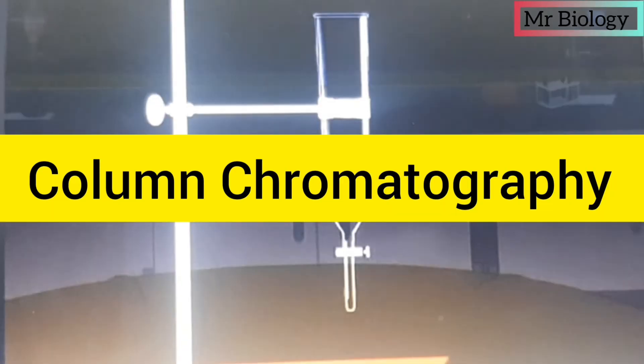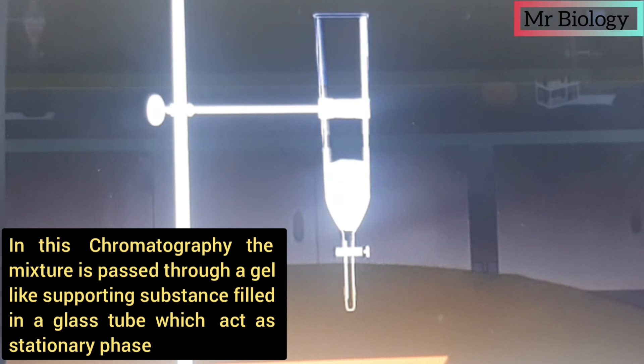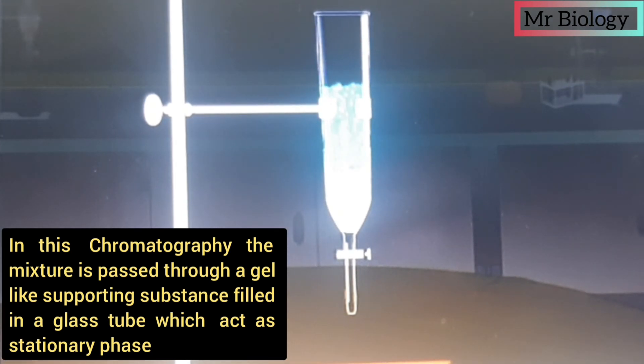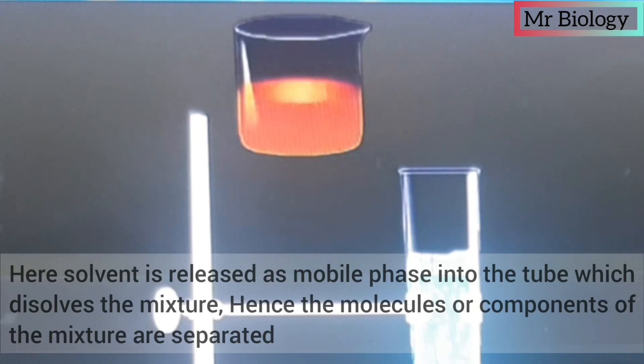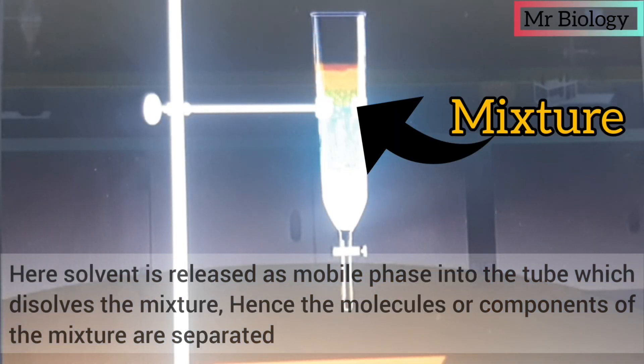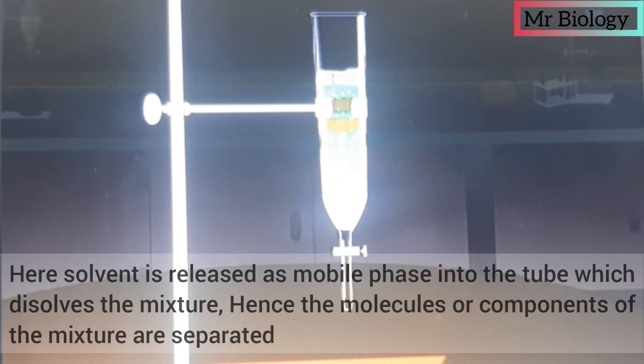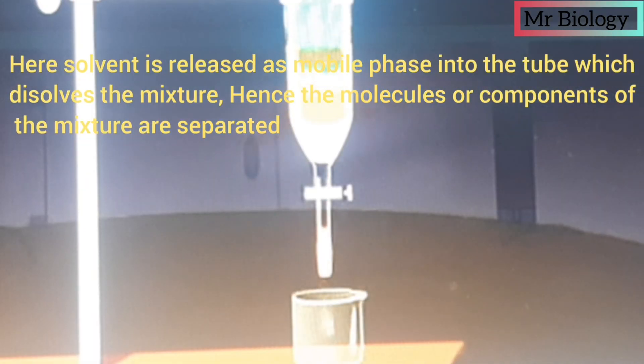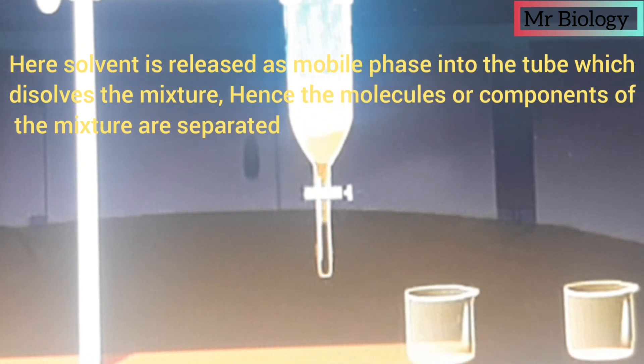Column chromatography: In this chromatography, the mixture is passed through a gel-like supporting substance. Column chromatography involves one filled in a glass tube which acts as stationary phase. Here solvent is released as mobile phase into the tube which dissolves the mixture. Hence the molecules or components of the mixture are separated.